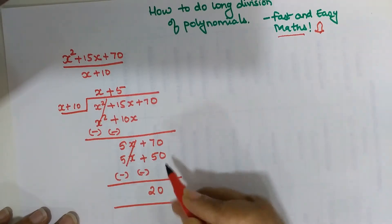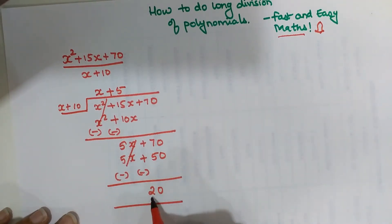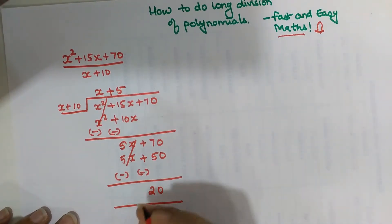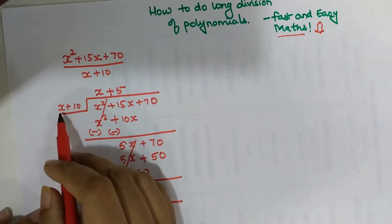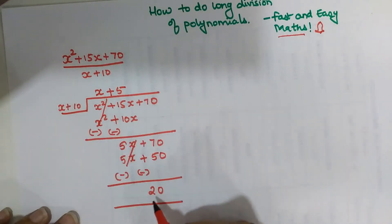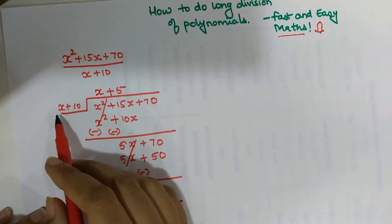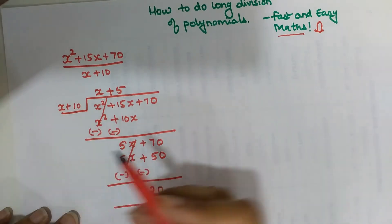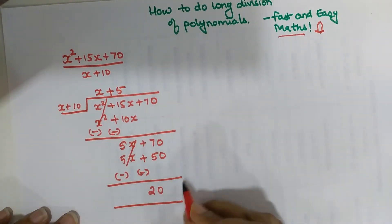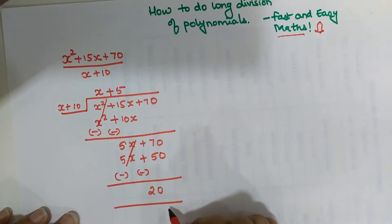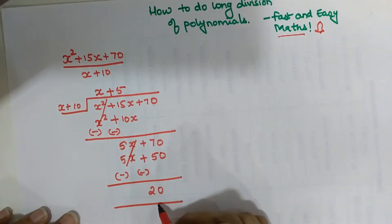I can't divide further because I have x in the divisor and 20 as the remaining term — I can't make x equal to 20. So I will leave the division here with a remainder of 20.